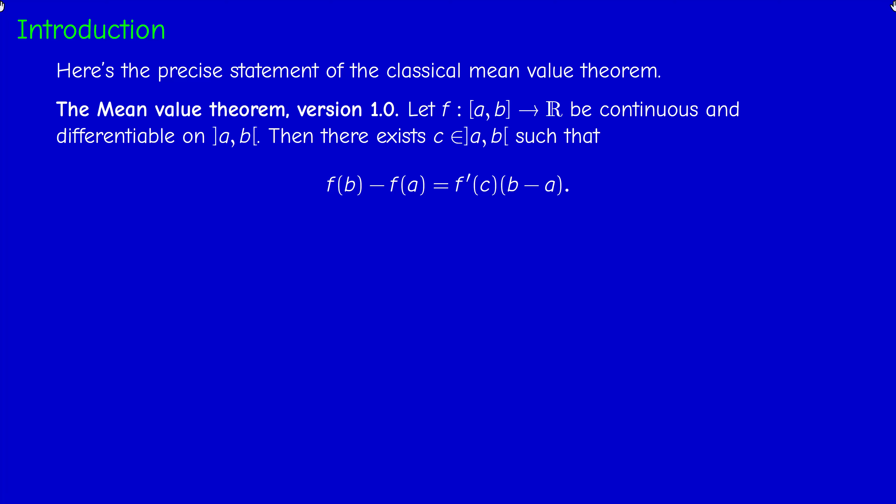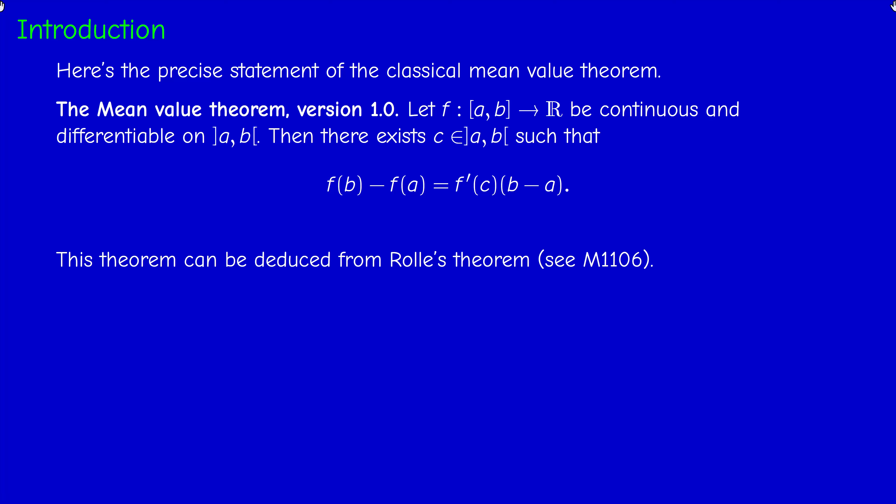There is a beautiful geometric interpretation: when you divide by (b − a), the geometric interpretation is that there is a point c inside the interval where the tangent is parallel to the chord joining (a, f(a)) to (b, f(b)). You can draw a figure if you like.